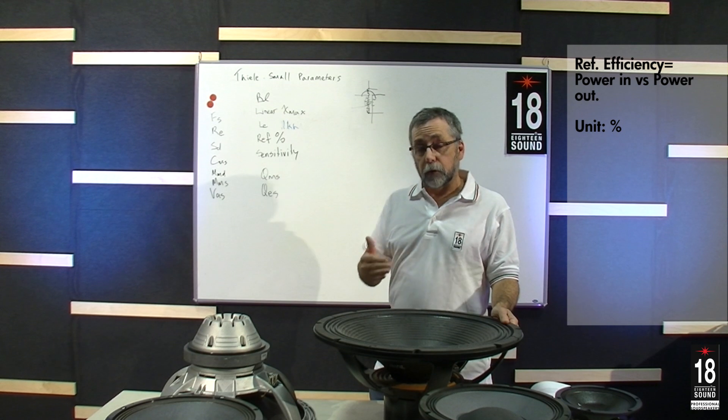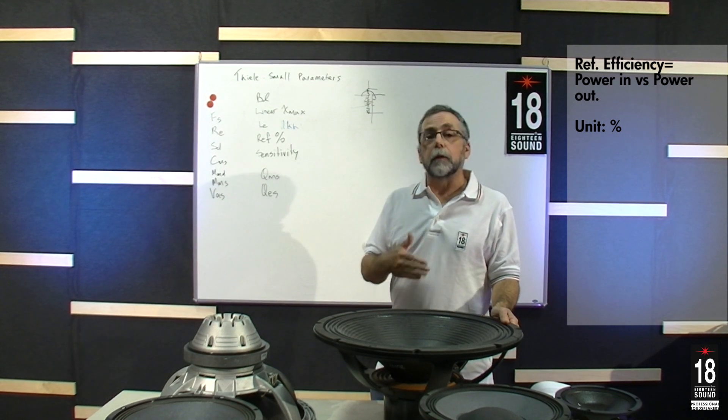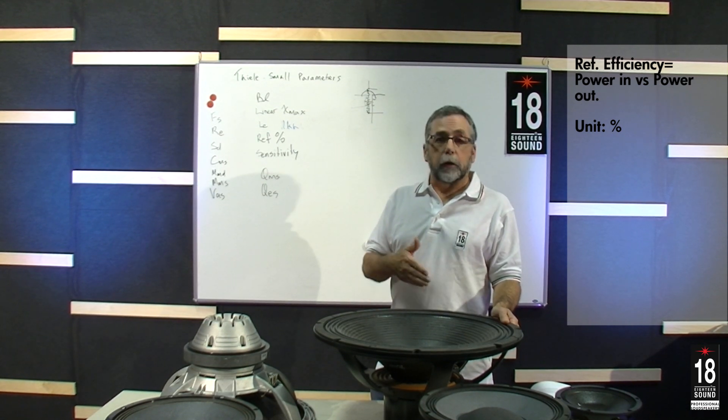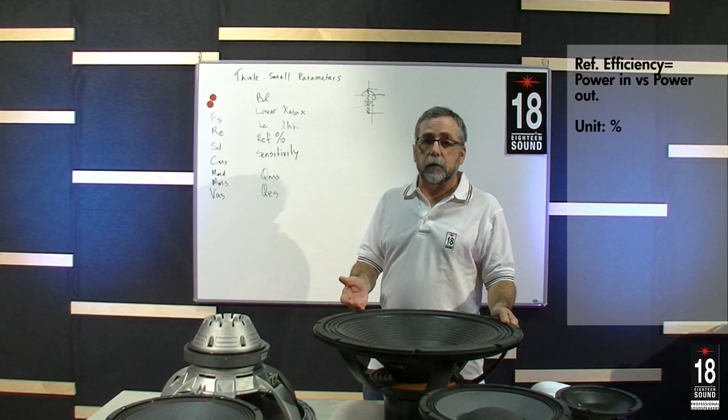What we see in pro loudspeakers is a reference efficiency typically in the zone of one to five percent. Compression drivers, especially when they get attached to horns, can be considerably higher - 20, 25, and theoretically even to 50 percent efficiency.